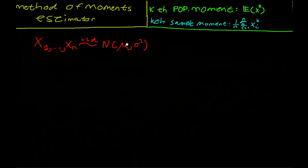I've shown you a few examples where we need to estimate only one parameter, so I thought I would show you an example where we need to calculate two parameters. We're going to take a sample from a normal distribution. As you can see, we need to calculate two parameters, so we will need to calculate the first and second population moment.